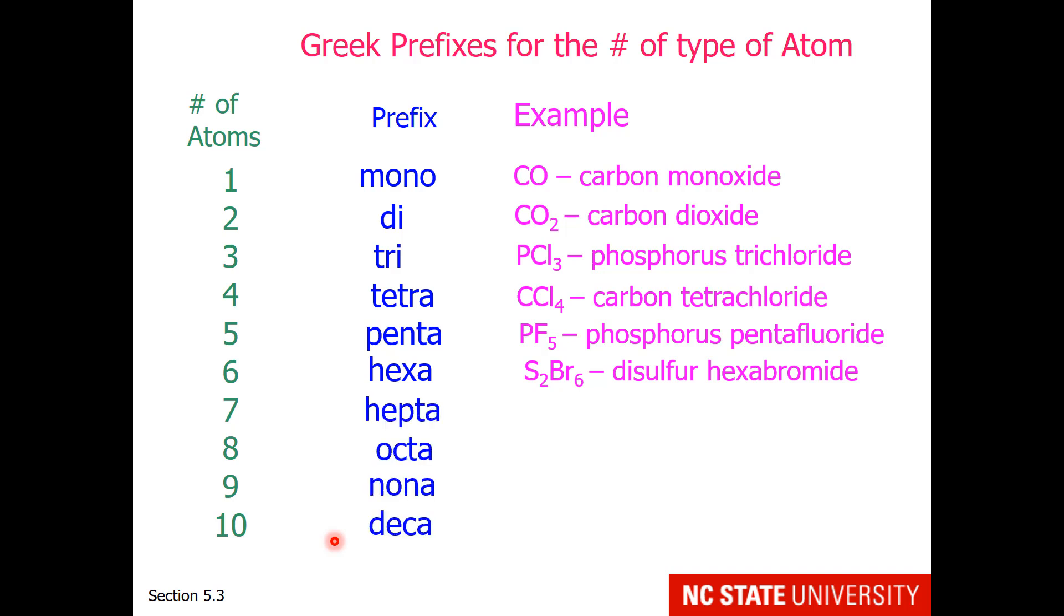And then the rest are hepta, octa, nona, deca. So hopefully your experience in geometry has given you some knowledge of what these prefixes are. P4O7 we would call tetraphosphorus heptoxide. And you'll encounter the others as we go along.